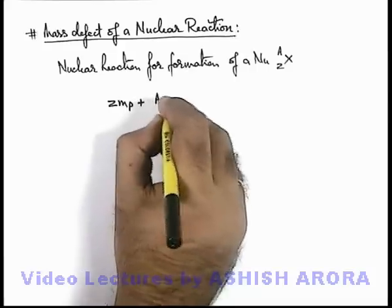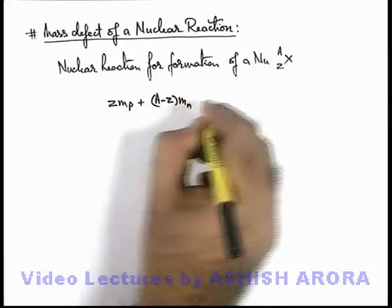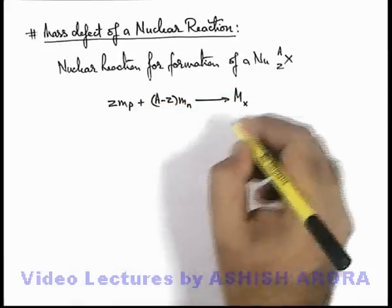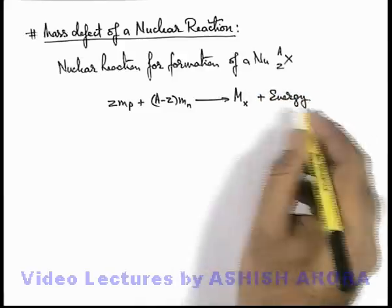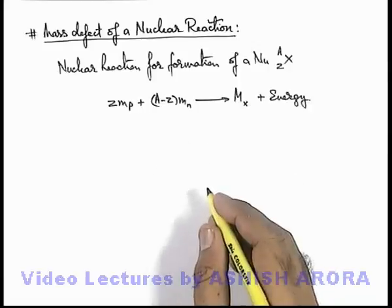plus (A minus Z) times mn. This gives the single mass of the nucleus X plus the energy which is released in the reaction, which we term as binding energy of this nucleus.